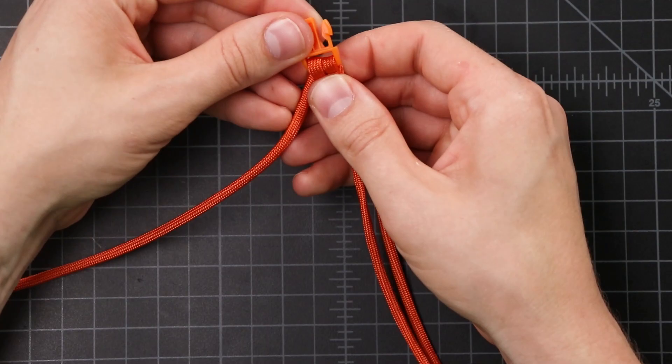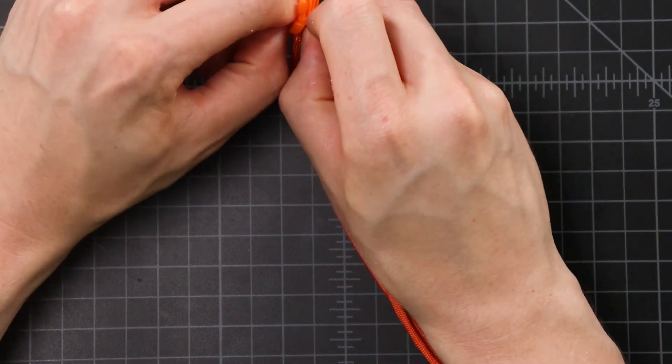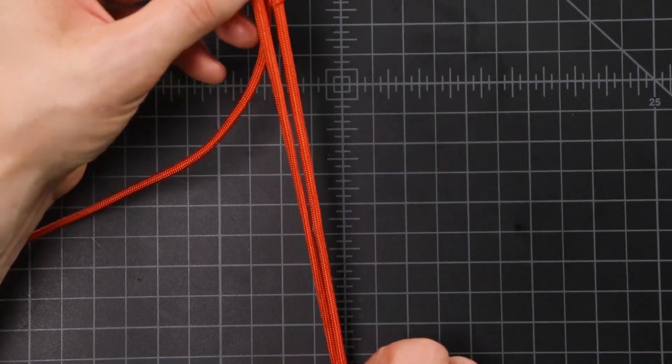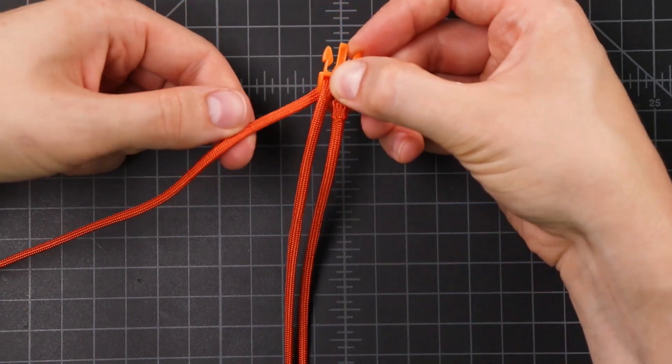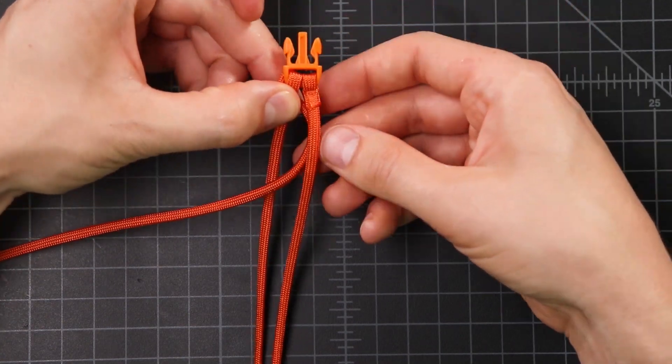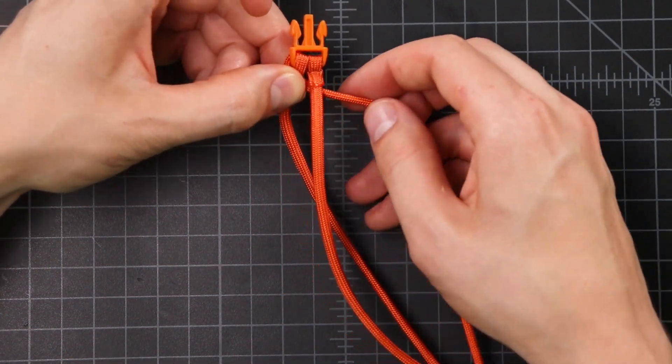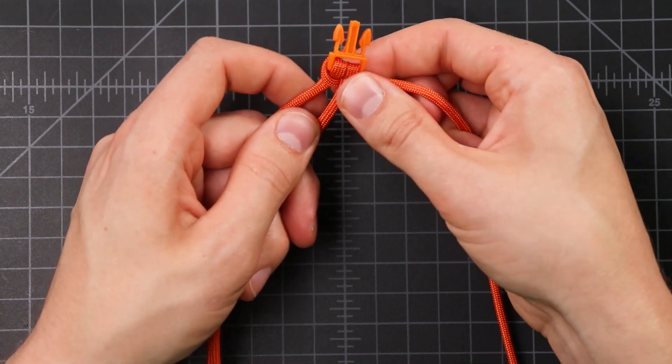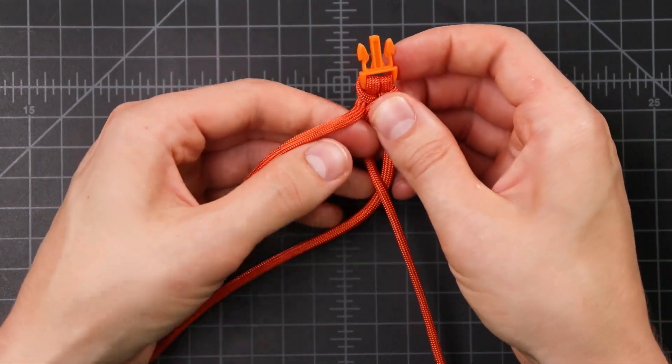Then we're going to start on our fishtail weave. And this probably isn't unfamiliar to you. This first step is going to be the same. We're going to bring our cord to the outside. And bring it down through the middle as we go over to the right side. And then once more, over the top, down through the middle.